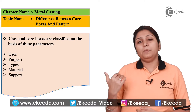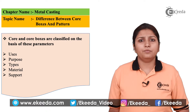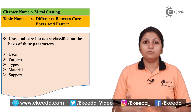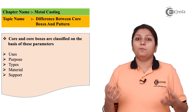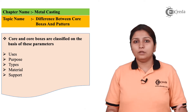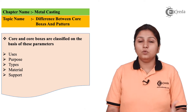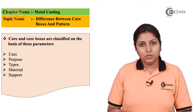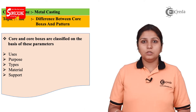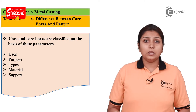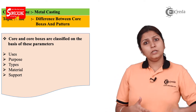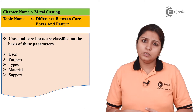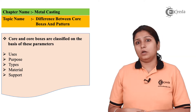Going through the parameters one by one, there are many differences between a pattern and a core box. Both give support and shape to your molten metal or whatever material you are using. The parameters on which they differ include uses, material, type, and support.